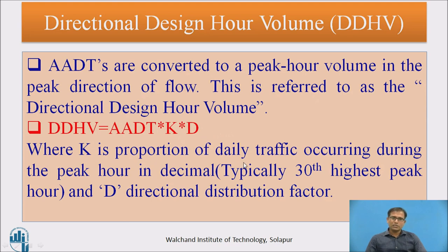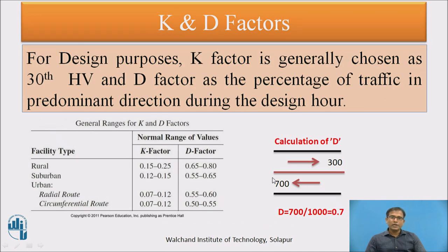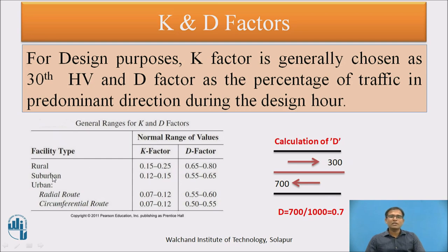K remains the same — the proportion of daily traffic during the peak hour in decimal, typically the 30th highest hourly volume. D is the directional distribution factor. To find D: if the left side has 300 vehicles and the right side has 700, D equals 700 divided by total traffic. From tables, K and D factors can also be obtained depending on facility type — rural, suburban, or urban — for radial or circumferential routes, to calculate DDHV.